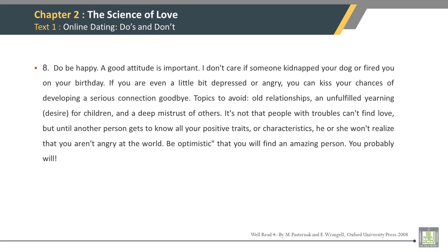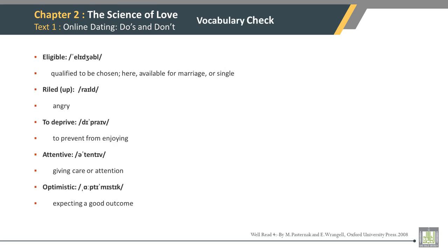Vocabulary Check. Eligible: qualified to be chosen; here, available for marriage or single. Riled: angry. To deprive: to prevent from enjoying. Attentive: giving care or attention. Optimistic: expecting a good outcome.